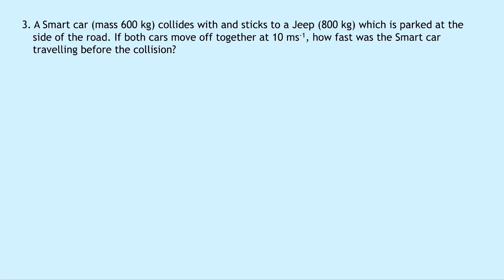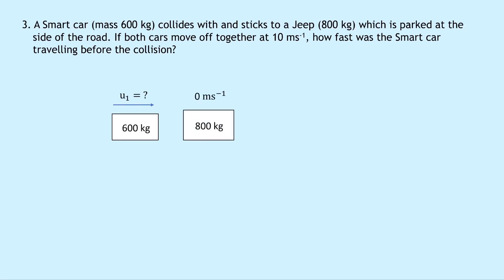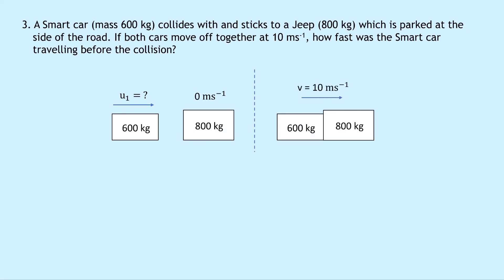Question three: a smart car of mass 600 kilograms collides with and sticks to a jeep of mass 800 kilograms parked at the side of the road. Both cars move off together at 10 meters per second. How fast was the smart car traveling before the collision? This asks for an initial velocity rather than a final one. Sketching: the 600 kg car moves right at u1 (unknown), the 800 kg jeep is stationary, and after they move together at 10 m/s.